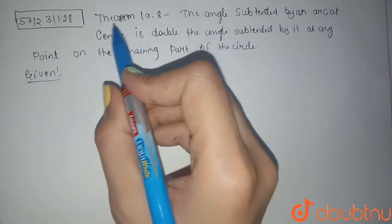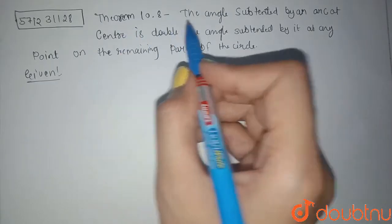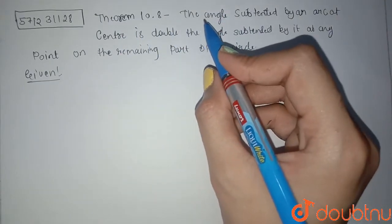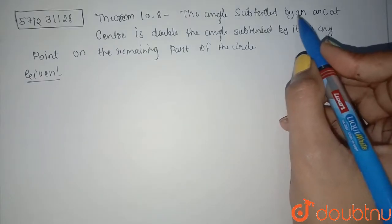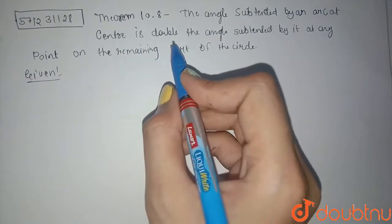Hello students, the question given is we have to prove theorem 10.8. The theorem is: the angle subtended by an arc at the center is double the angle subtended by it at any point on the remaining part of the circle.